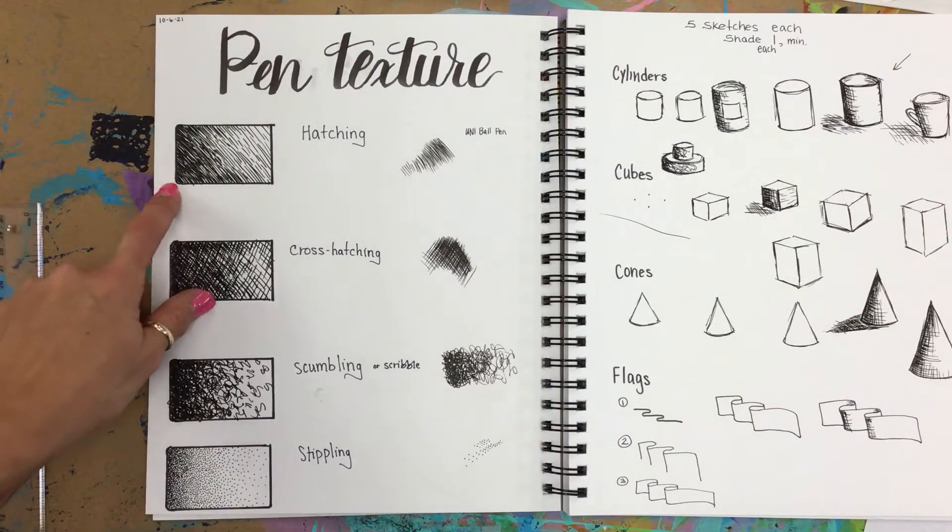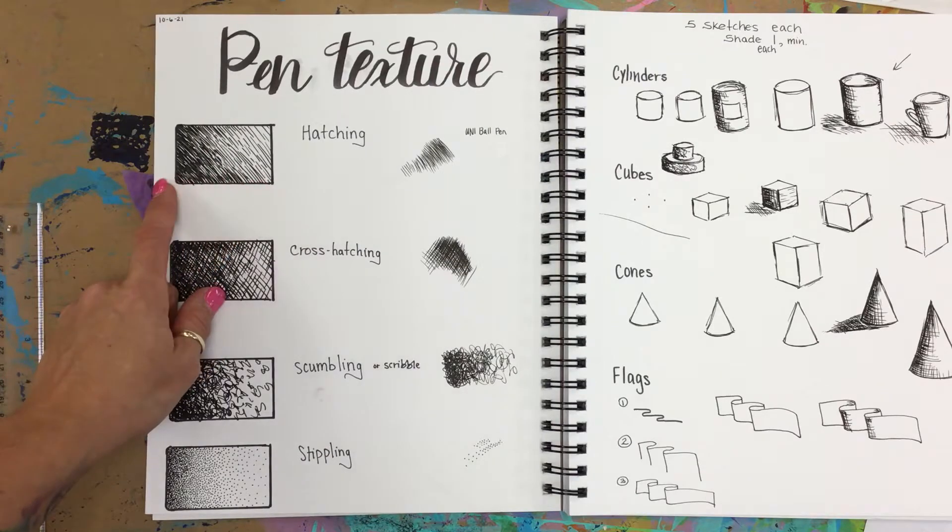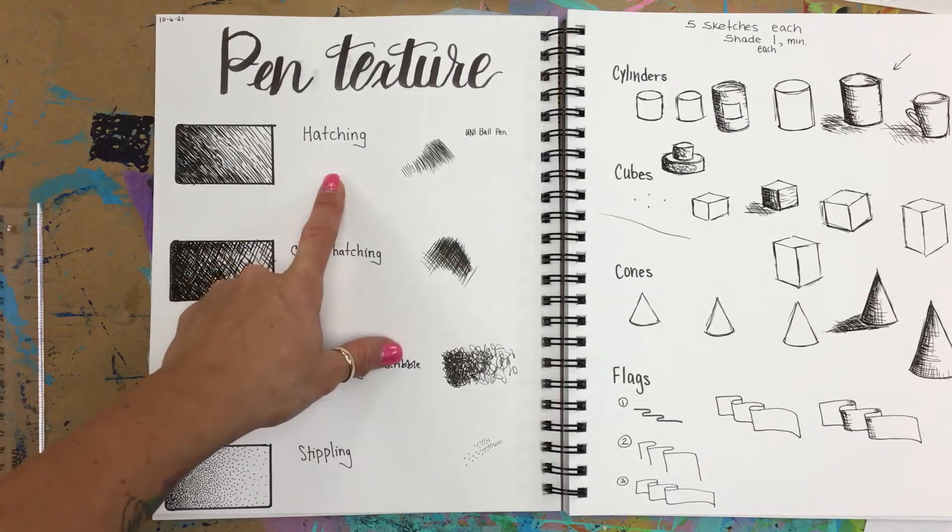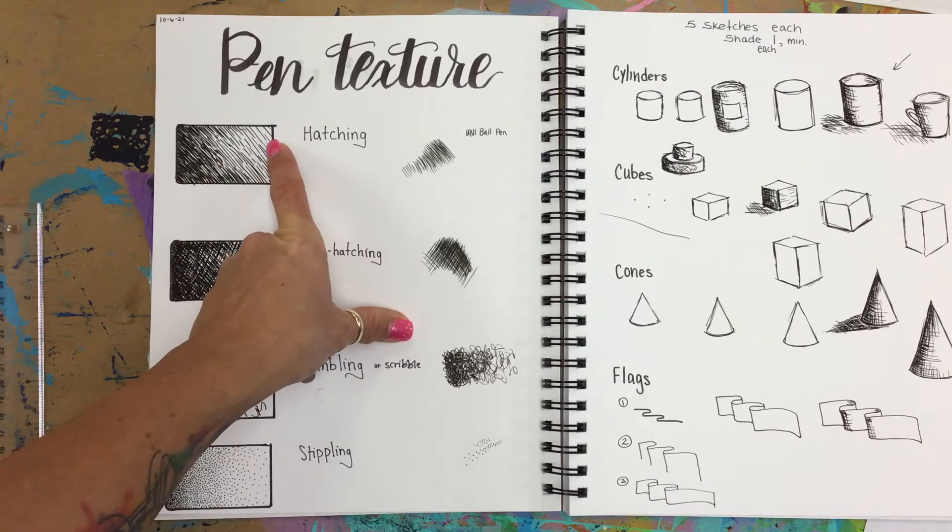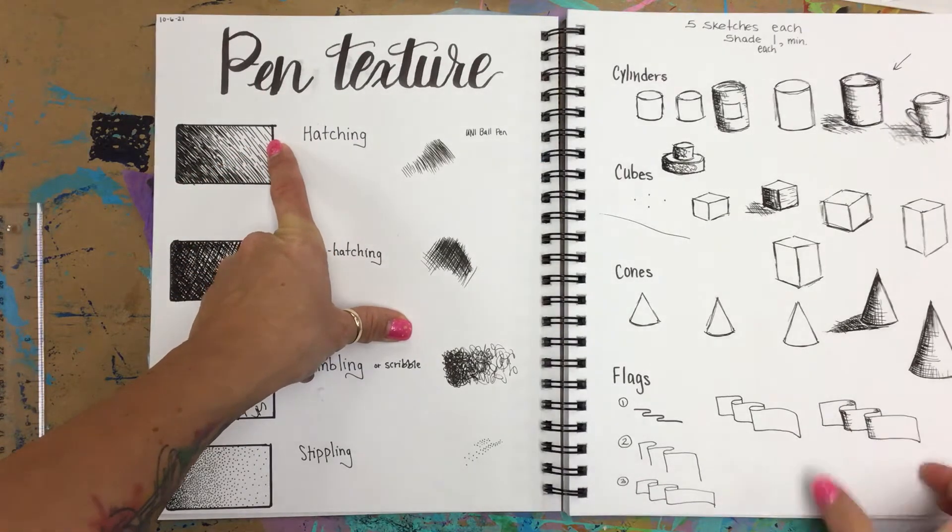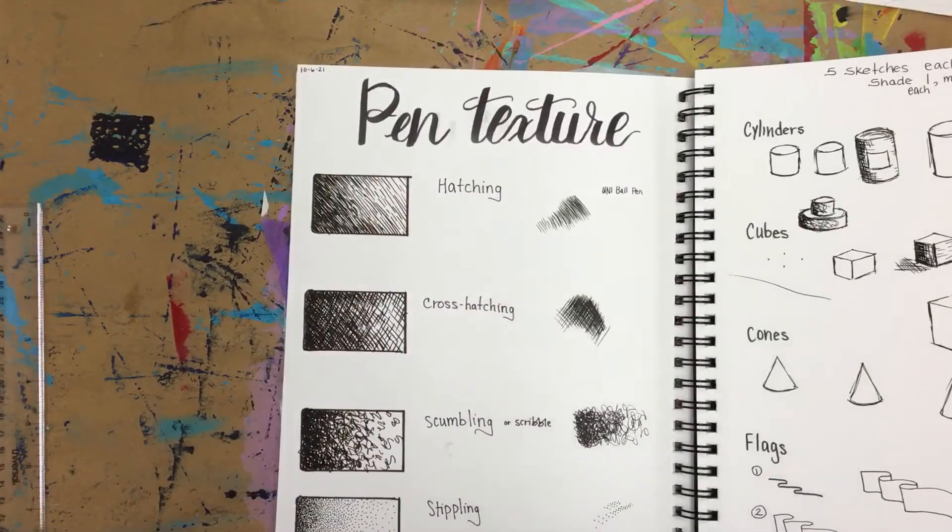The first one is hatching - it's just straight lines. I would put across a coat of lines similar to this one, so the lines are kind of spaced out.